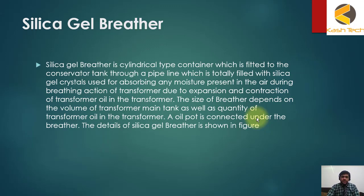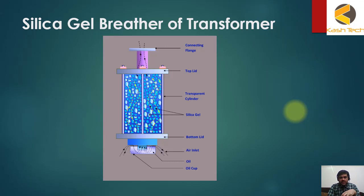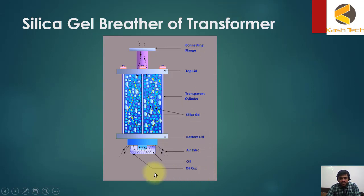So the transformer is literally breathing, and when it does, the oil can absorb moisture. Ideally, this moisture should be trapped. Silica gel has the quality to absorb moisture, so we put a bottle filled with silica gel and when air is going in or out, the silica gel absorbs the moisture so the oil remains in good condition for a longer time.